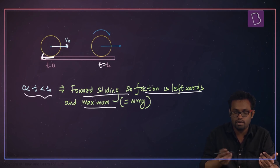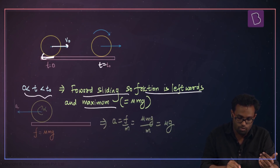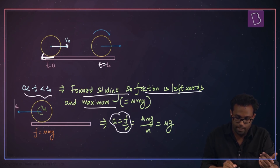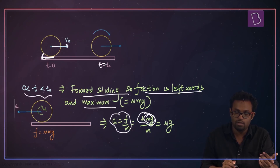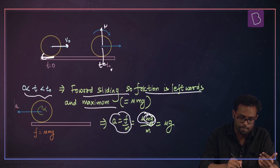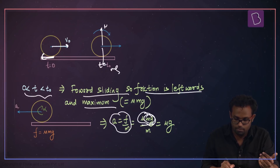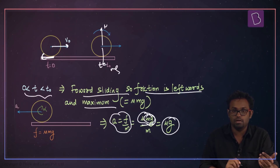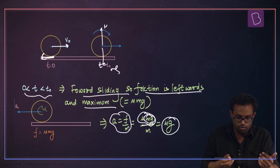The only force acting is the friction force, so there is a retardation. The retardation or negative acceleration is a = f/m. F equals μ times N, and N here is mg, so that gives μmg/m which equals μg. The retardation is equal to μg.